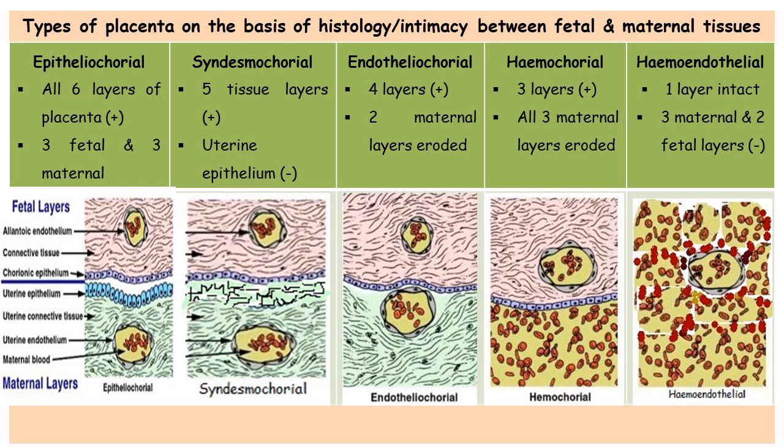In the hemochorial placenta, all three layers contributed by the maternal side are eroded by the chorionic villi. The last type is hemoendothelial placenta. In this type, all three maternal tissues and two fetal tissues are eroded — the chorionic epithelium and chorionic connective tissue disappear. Only one tissue from the fetal side remains: the fetal endothelium. Only one layer separates the maternal blood from the fetal blood, which is the endothelium of the fetal blood vessels.